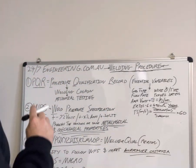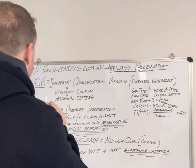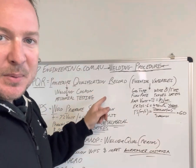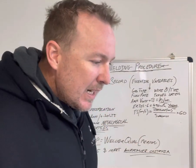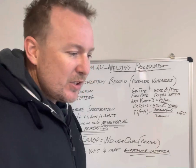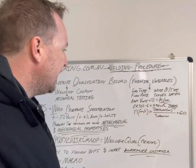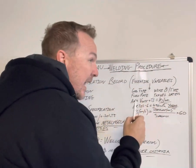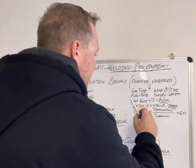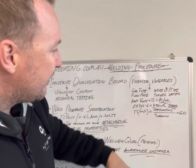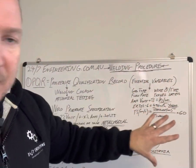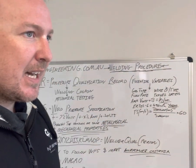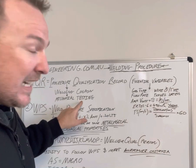So — PQR, Procedure Qualification Record. That's where you weld the coupon. You've probably seen the guy come out, stand there with a stopwatch, and watch a welder do a weld coupon. What he's actually doing is recording the gas type, the wire type, the wire speed, flow rate of the gas, travel speed, amps, volts — all your essential variables. All of this stuff contributes to the mechanical properties of the weld after it's done.